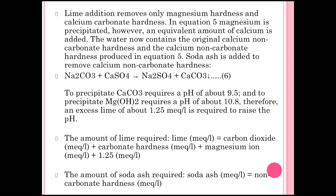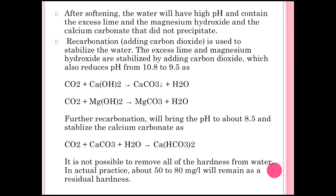The amount of lime required (in liters) equals: CO₂ (liters) + carbonate hardness (liters) + magnesium ions + 1.25. The amount of soda required equals non-carbonate hardness (in liters). After softening, the water will have high pH and contain excess lime, magnesium hydroxide, and calcium carbonate that did not precipitate. Recarbonization — re-addition of CO₂ — is used to stabilize the water; excess lime and magnesium hydroxide are stabilized by adding CO₂, which reduces pH from 10.8 to 9.5, and CO₂ + Ca(OH)₂ gives CaCO₃ precipitate.